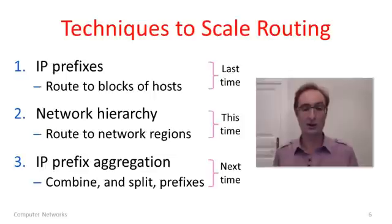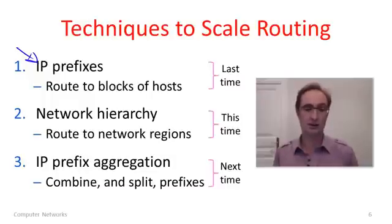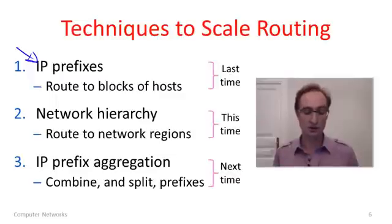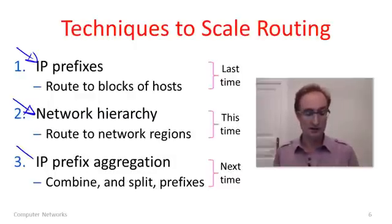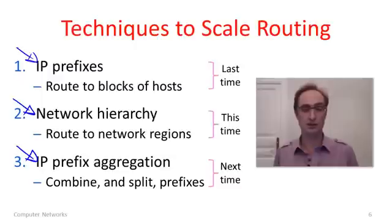What are those techniques? I've written them down here. The first technique is the use of IP prefixes, where we don't have an entry in the table for every individual host — rather, we have an entry for a block of hosts called an IP prefix. In this segment, we're going to talk about network hierarchy, which is routing to different regions of the network. And then in a future segment, we'll talk about IP prefix aggregation, which are more techniques to join or split prefixes using hierarchy in different ways.